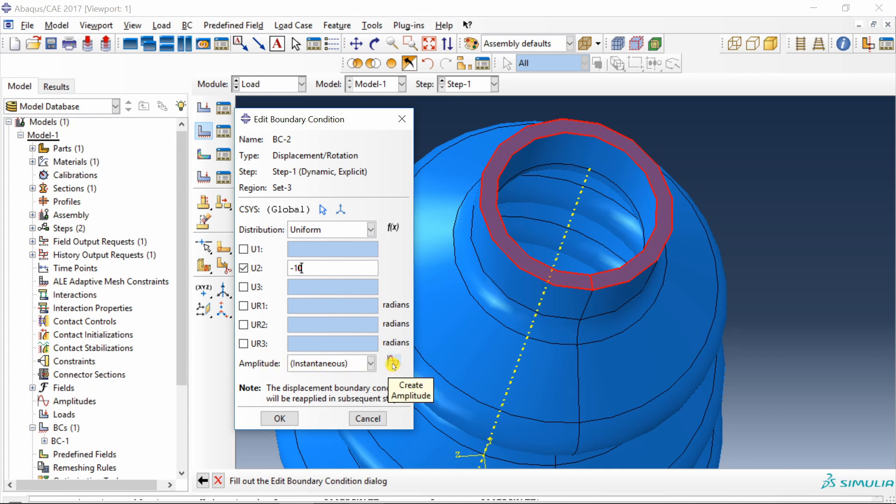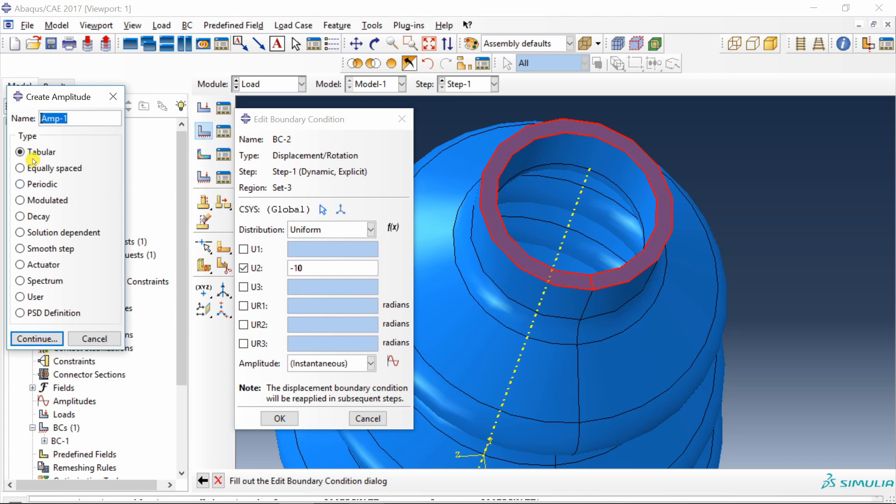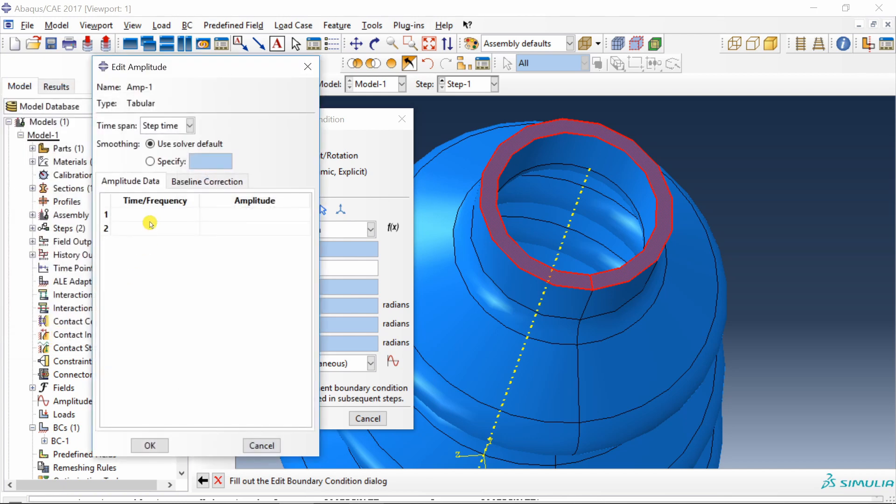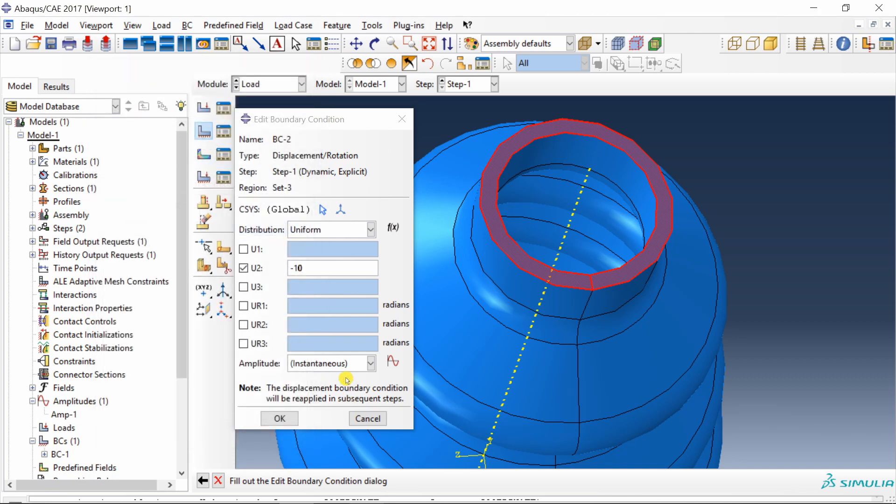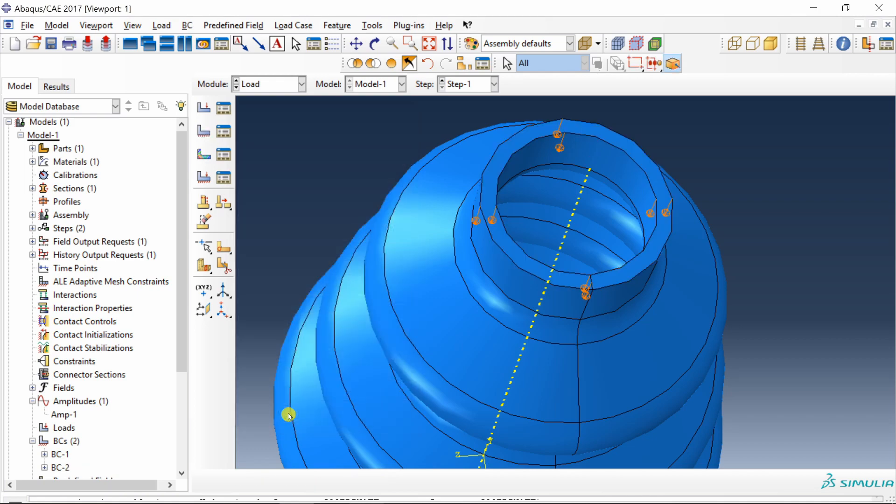Whenever you use non-zero displacement boundary condition, you have to define amplitude as well. So for that, let's create an amplitude using this button over here. Select tabular. Say continue. I am going to create an amplitude just with two points. When time is 0, amplitude is 0. And when time is 0.01, amplitude is 1. Say okay. Choose that amplitude which we just created and say again okay over here. You can see now we are compressing it in vertical direction.